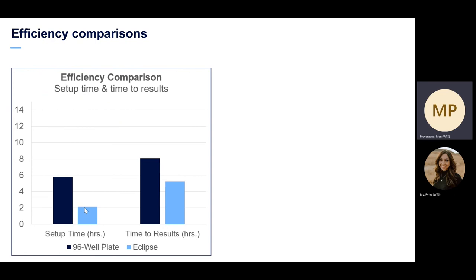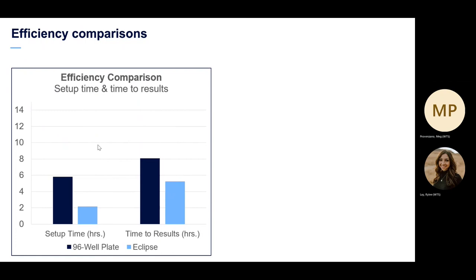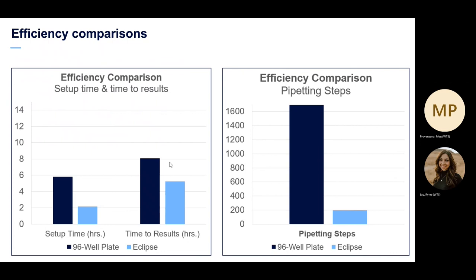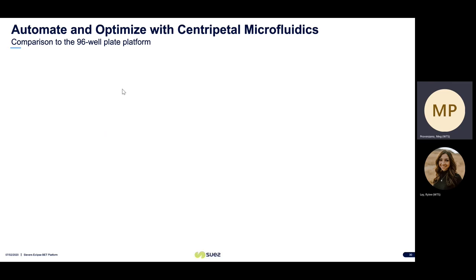Let's do an efficiency comparison between 96-well plates and the Eclipse. The setup time for the 96-well plate was much greater versus the Eclipse, because there's no need to create your own standard curve — the RSE standards are already embedded on the plate — which decreases setup time significantly and also significantly decreases time to results. The Eclipse really only requires 27 pipetting steps for a 21-sample microplate, compared to many more for the 96-well plate.